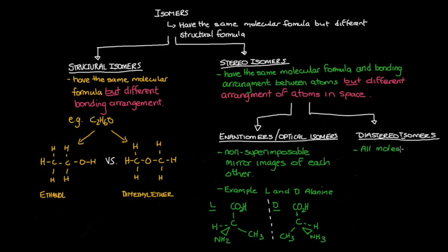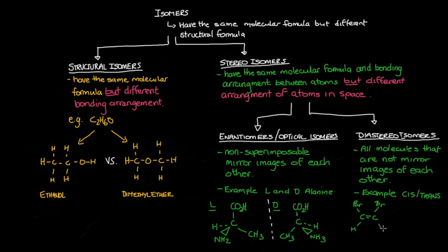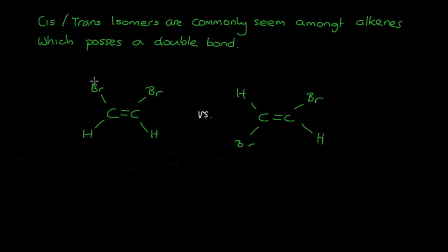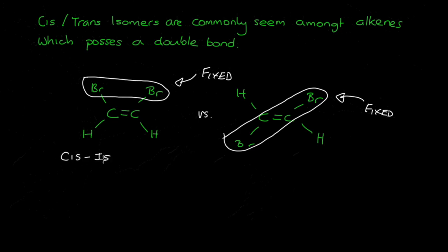Now, if the molecules are not mirror images of one another, they belong to another class of stereoisomer, known as diastereoisomers. These include cis and trans isomers. The one on the left has the substituents, in this case bromine, on the same side of the double bond, and is termed the cis isomer. While the one on the right has the substituents, once again bromine, diagonally on opposite sides of the double bond. And this is termed the trans isomer.